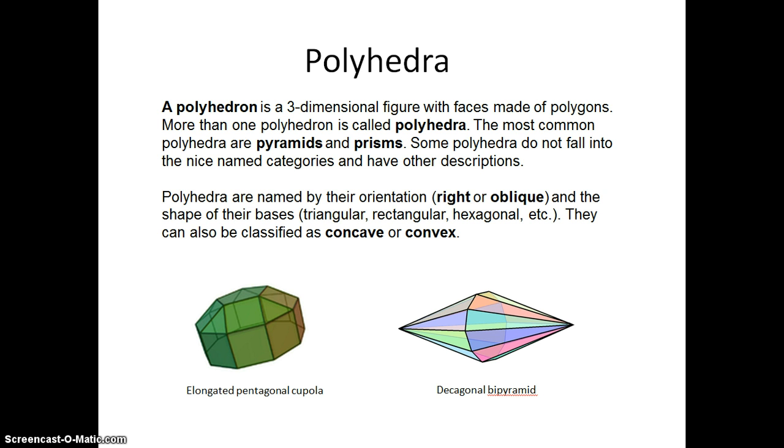The decagonal bipyramid is two pyramids glued together with twelve sides, and as you see, each of their faces are triangle polygons.